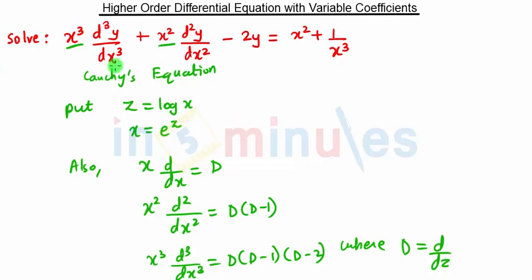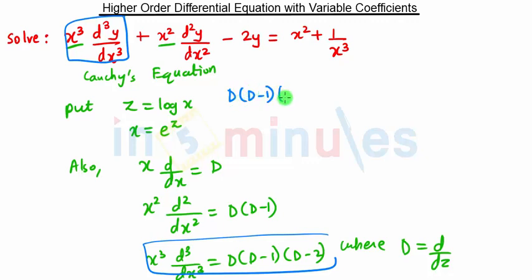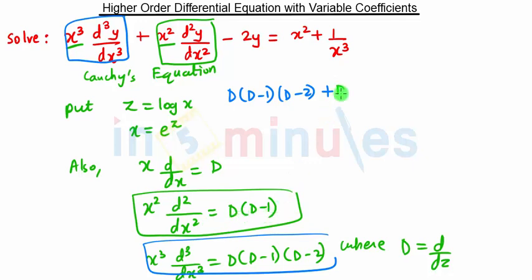We are going to substitute x = e^z. So x³ becomes e^(3z). For x³ d³/dx³, we substitute D(D-1)(D-2). This part now becomes D(D-1)(D-2). For x² d²y/dx², we substitute D(D-1), multiplied by y. Here it is y, and also into y, minus 2y.